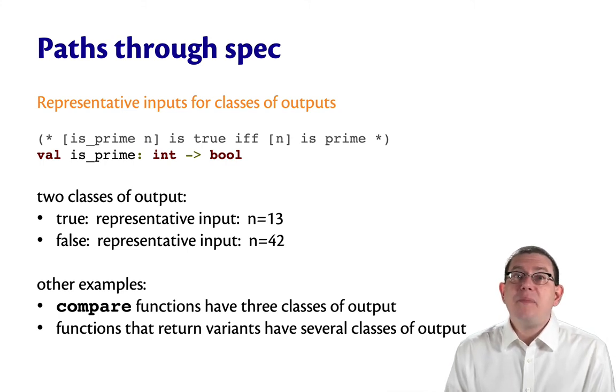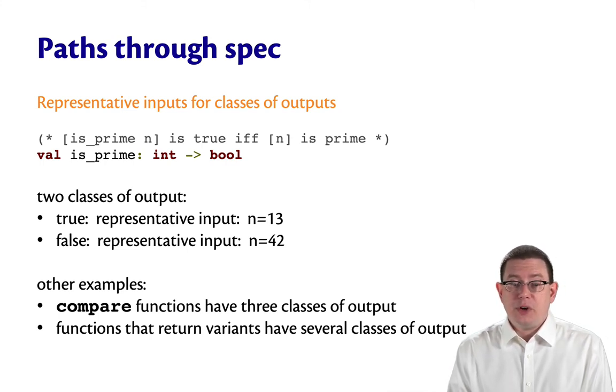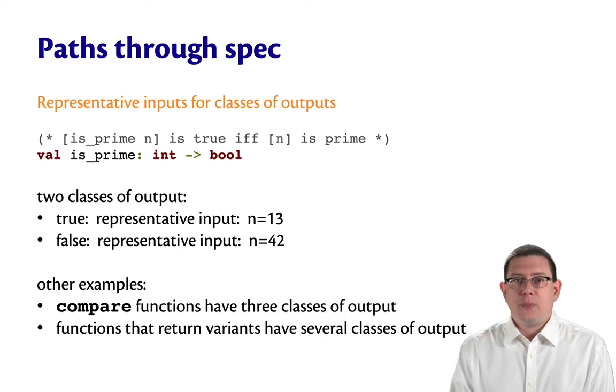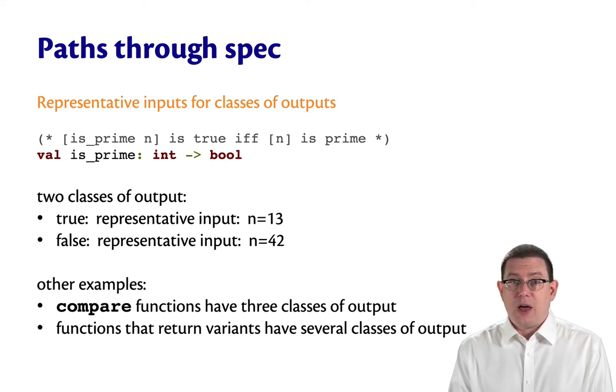Some other examples here. The compare function that the list standard library takes, that has three classes of output. So if you're testing a compare function, invent three different black box tests to test the paths through that specification. Any function that returns a value of a variant type is going to have several classes of output. So produce black box tests that trigger each of those possible constructors.